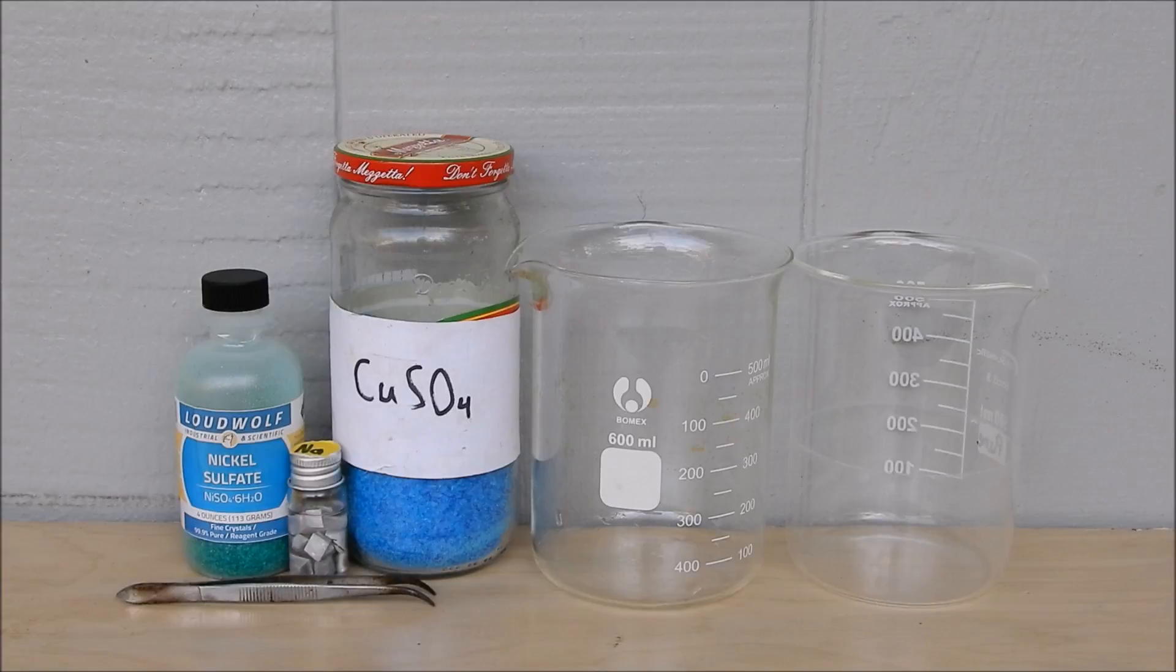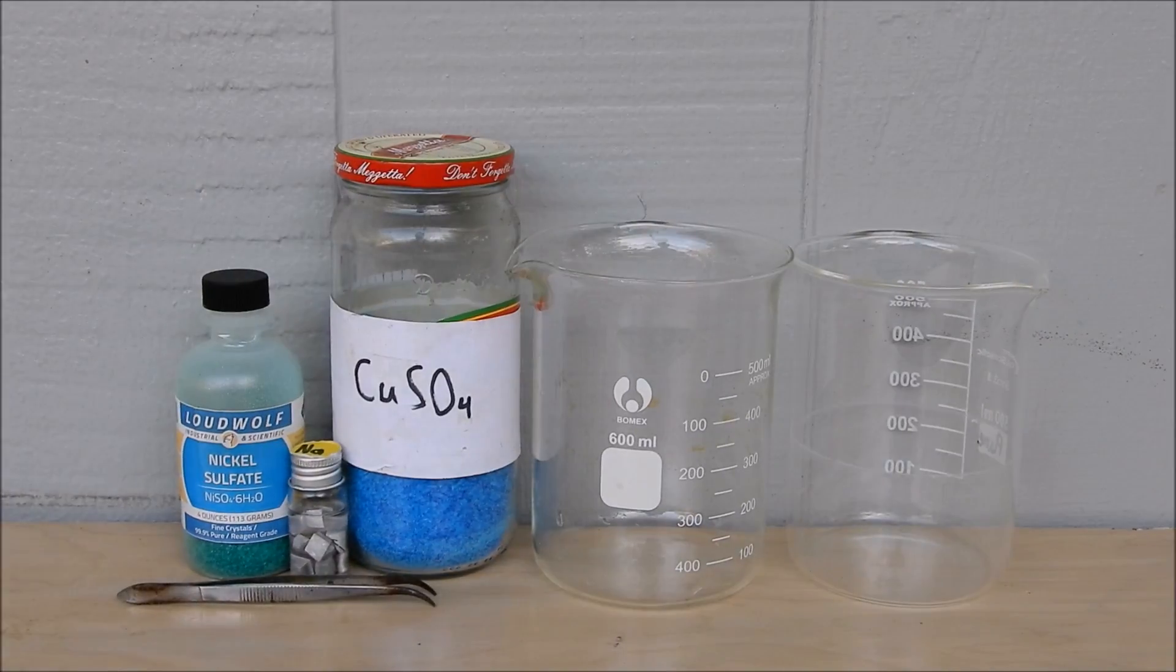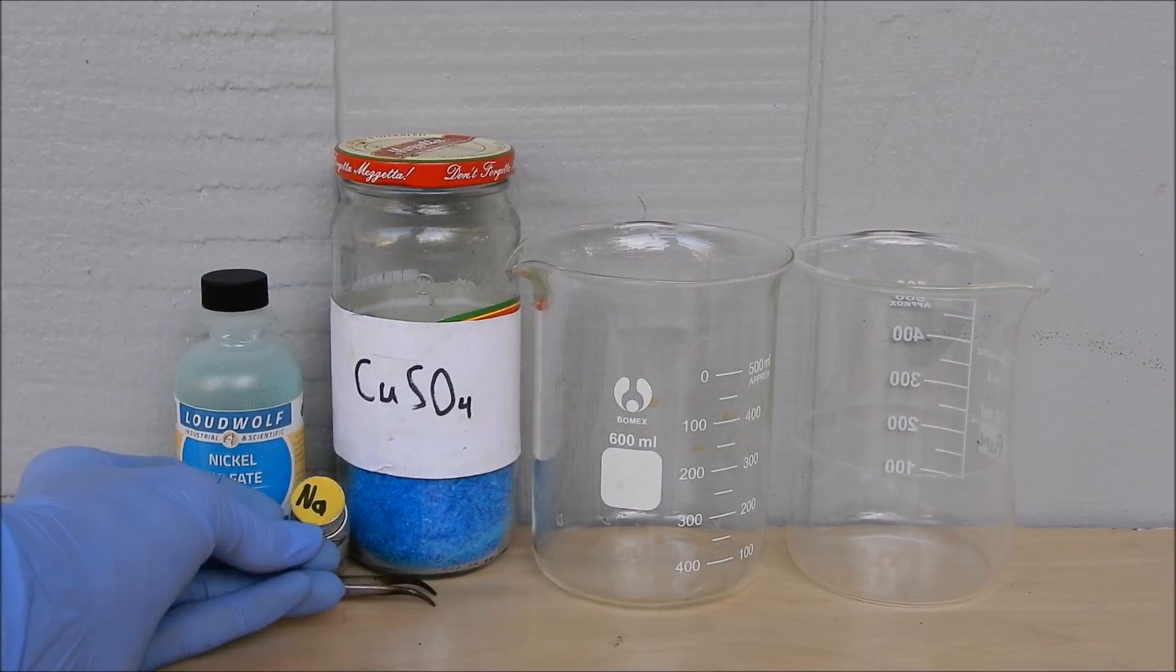Good morning everyone and welcome back to Back Maxi. In today's video we're going to be reducing nickel sulfate to nickel metal using sodium metal, because in my last videos I tried to make nickel metal with magnesium and aluminum and it just didn't work. So I figured why not increase the power of reducing capabilities.